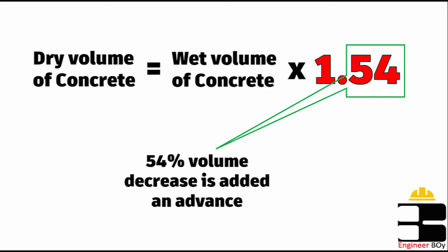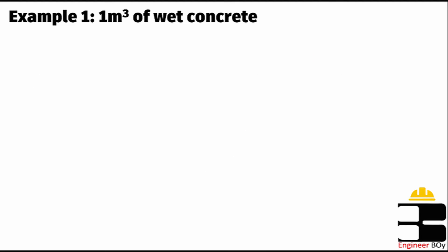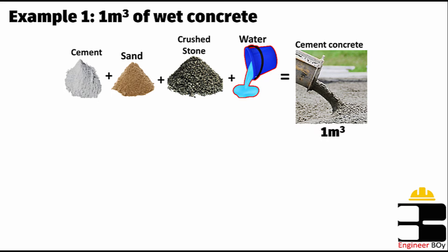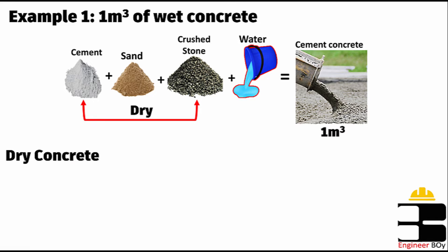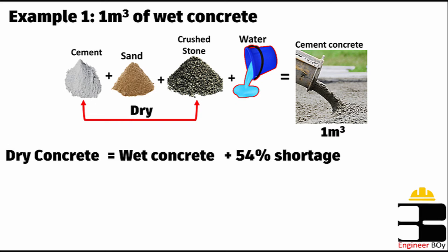As we already know, after adding water content into concrete ingredients we can have a 54% concrete volume reduction. That's why we add 54% of concrete in advance to the total concrete work. For example, let's say we have one cubic meter of concrete work. To prepare one cubic meter of wet concrete, we need each ingredient in dry form — cement, sand, and coarse stones are bought in dry form. So we convert one cubic meter of wet concrete into dry concrete by adding the 54% concrete shortage.